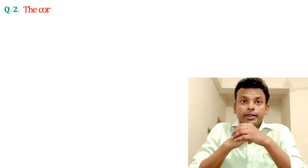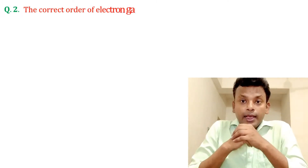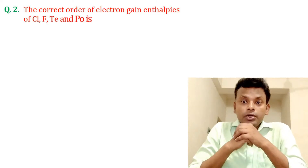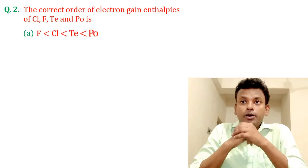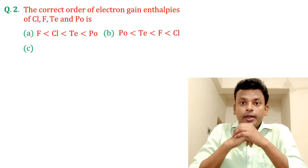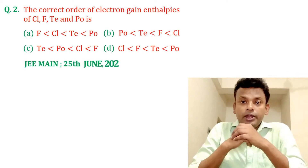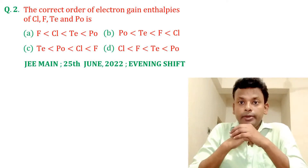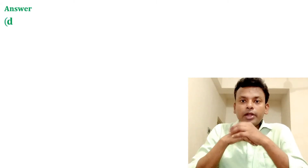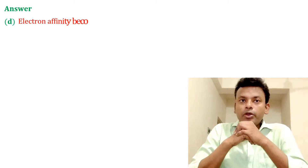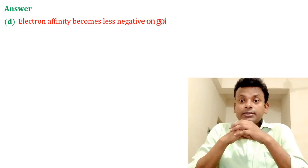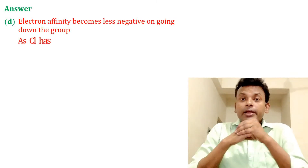Question 2: The correct order of electron gain enthalpy of Cl, F, Te, and Po is — option A, option B, option C, and option D. This question was set in JEE Main 25th June 2022 evening shift. Answer: option D is the correct answer. Electron affinity becomes less negative on going down the group, as chlorine has maximum electron affinity among all the elements.